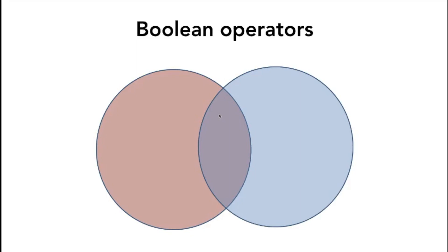Let us see how these operators work. We have two circles — one red and one blue — representing topics. All articles from the red topic and all articles from the blue topic, with an overlapping area representing articles containing both topics. When I use the Boolean operator OR and search with 'red OR blue,' I get everything from the red circle, everything from the blue circle, and everything from the overlapping area. This is a very broad search.